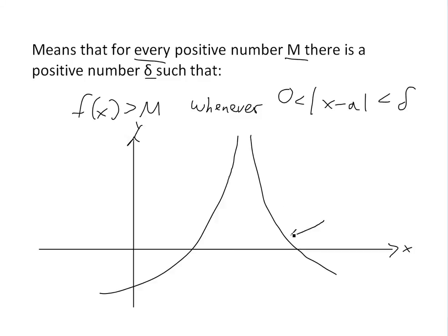If I just graph this function f(x), I want to illustrate this precise definition — it's pretty straightforward. Let's say the limit has a vertical asymptote at x = a. The intuitive definition states that as you get closer and closer to a, f(x) keeps going up and up, going higher and higher toward infinity at this asymptote.